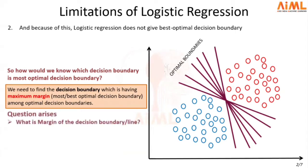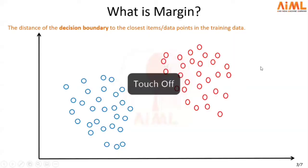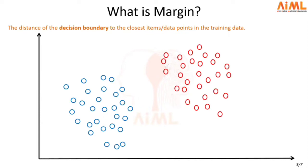Now the question arises: what is the margin of the decision boundary? The concept of the margin of the decision boundary is pretty simple — it is the distance of that specific decision boundary to the closest data points. Suppose this is our decision boundary. If we compute the distance of the decision boundary to the closest data point, which are these two distances, and we select the minimum of these two distances, that distance is going to be the margin of the decision boundary.